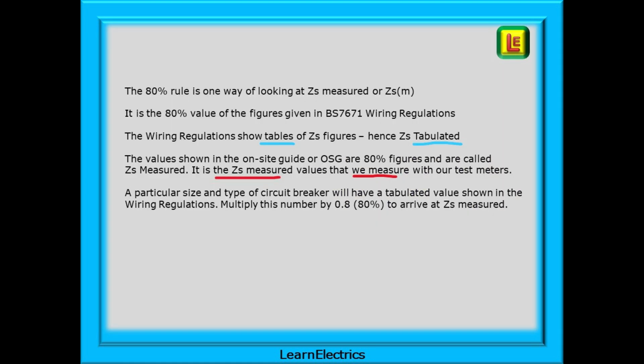The 80% rule is one way of looking at ZS measured or ZSM. It is the 80% value of the figure given in BS 7671 wiring regulations. The wiring regulations show tables of ZS figures hence ZS tabulated. The values shown in the on-site guide or OSG are 80% figures and are called ZS measured. It is the ZS measured values that we measure with our test meters.